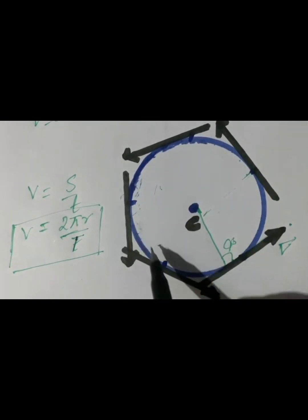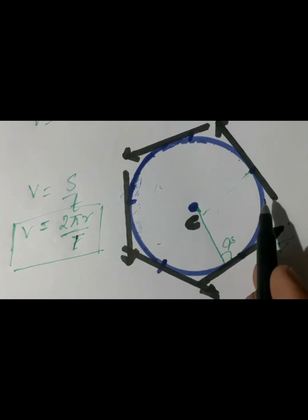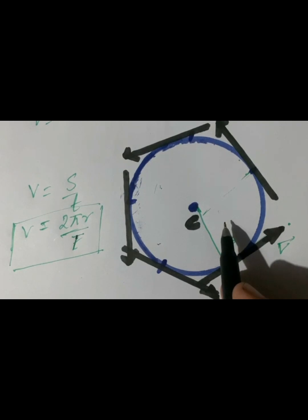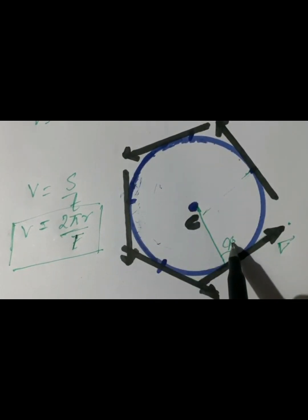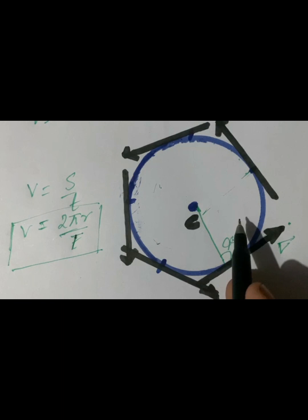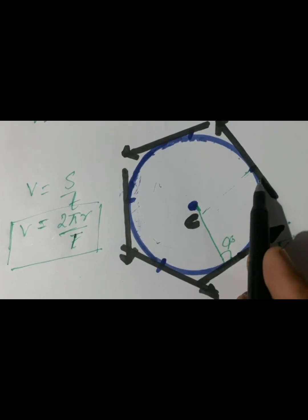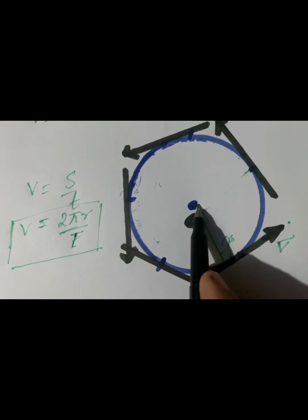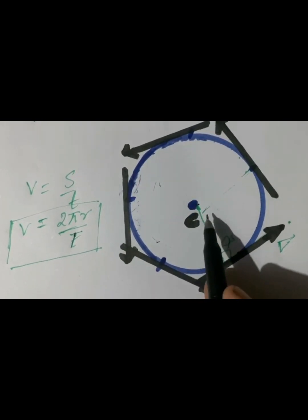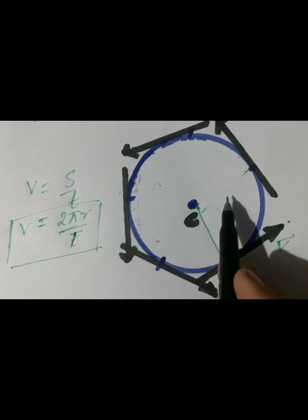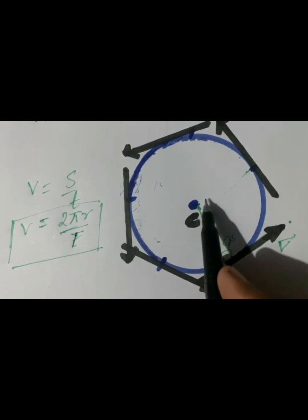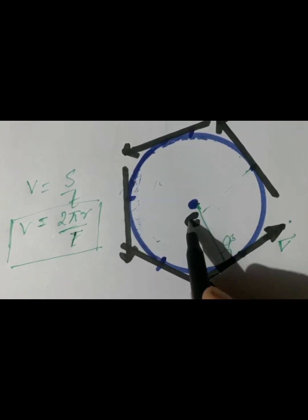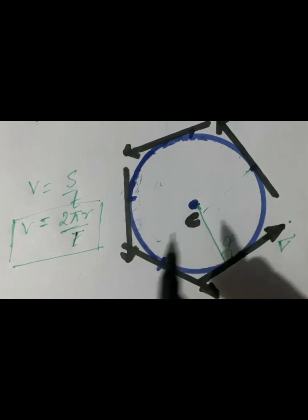Can a body moving in a circle have acceleration? Definitely it must have acceleration, because velocity is changing. That acceleration is always directed towards the center — it is called centripetal acceleration, meaning center-seeking acceleration, and its direction is towards the center of the circle.